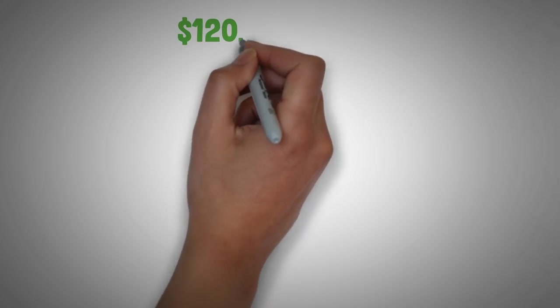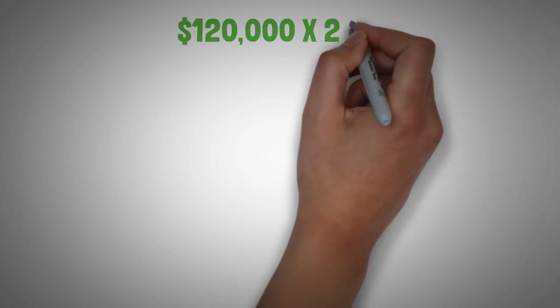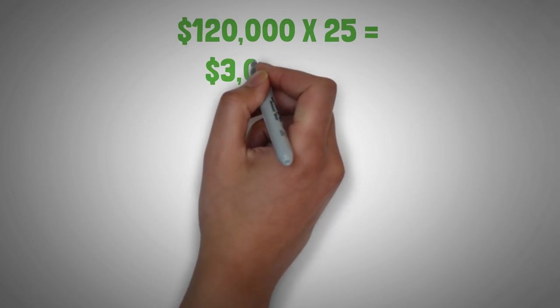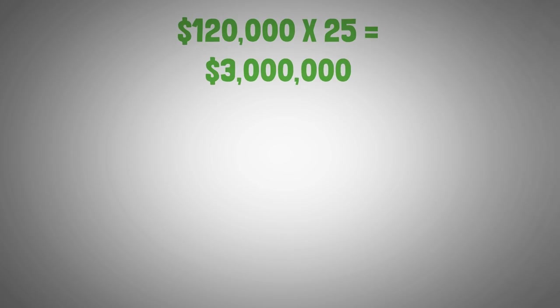In order to withdraw 4% from your portfolio every year, or $10,000 per month, you'd need 25 times that amount, or $3 million.